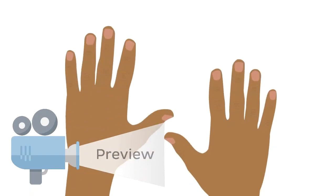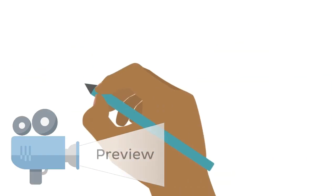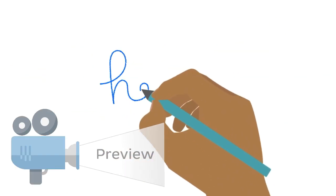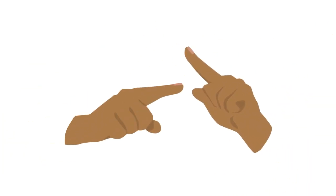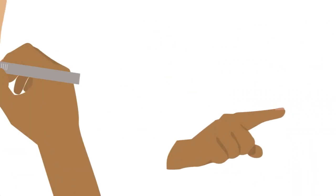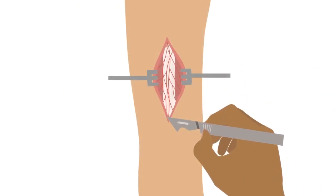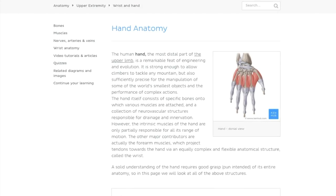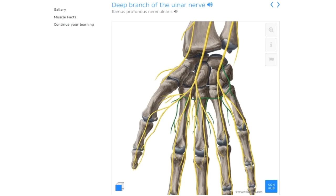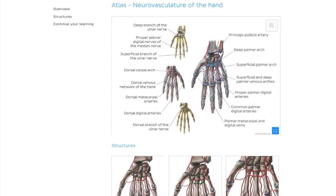You already know that you use your hands for a lot of different activities, like writing, communicating, and of course, dissecting. And if you've been using our website, you may even be familiar with the muscles, nerves and arteries that are involved in helping you perform each of these actions.